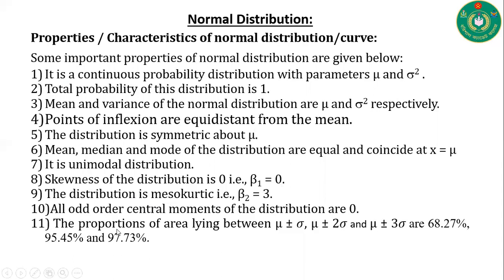Number eleven: the proportions of area lying between μ ± σ, μ ± 2σ, and μ ± 3σ are 68.27%, 95.45%, and 99.73% respectively.